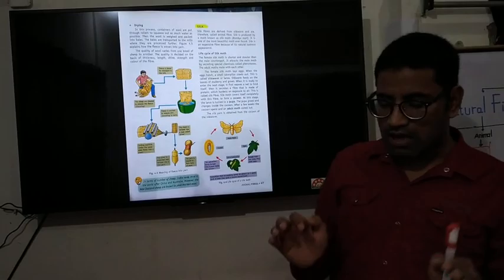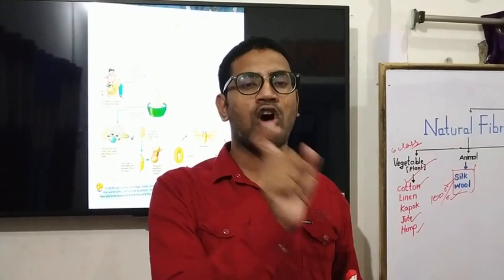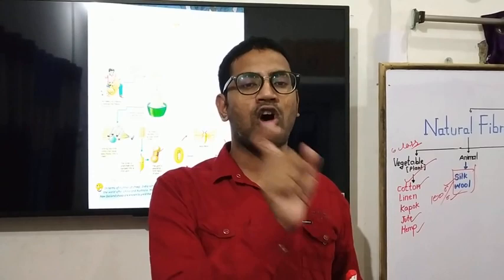The next slide will cover silk. There are two important topics in this chapter: first, how we obtain wool from sheep — which involves 5 to 6 steps that you must complete properly for your exam — and second, silk will be discussed next. That's all for today's class.